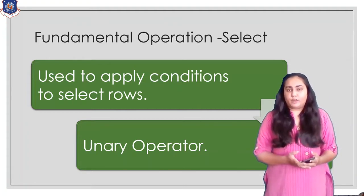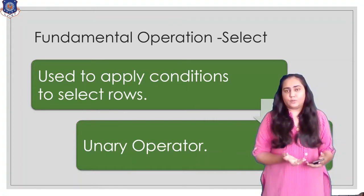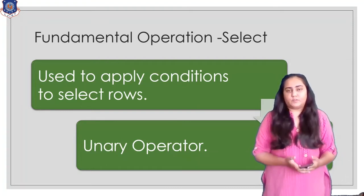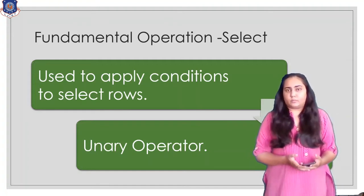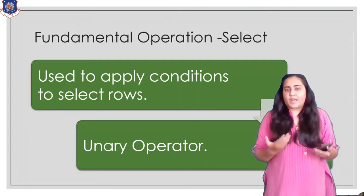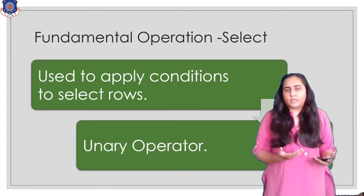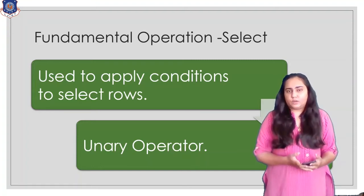For example, if I want to take a modulus of a number — that is, find its absolute value — I only need to pass one number. If I give minus five, I get five. If I give five, I get five. But if I want to add, multiply, subtract, or divide, I need to provide two numbers. So select is a unary operator, while a binary operator is one that requires two operands.